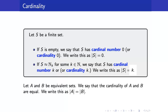Let us now talk about the cardinality of a set, specifically the cardinality of finite sets. We have just seen from the definition that a finite set is either empty or it is equivalent to N sub k. If s is empty, we say that it has cardinal number 0, or cardinality 0, and we write it this way. If the set is equivalent to N sub k, then we say that the cardinality of s is equal to k.